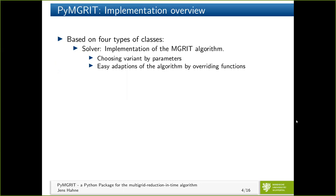Let's talk about the implementation details. In general, we have a class-oriented approach with four types of classes. We have the solver, which implements the MGRIT algorithm. You can choose between different variants by parameters, but most have default values. If you're a beginner, you can just use the defaults, which perform relatively well for most cases. If you're more of an expert, you can choose different variants. It is also easy to adapt the algorithm to your own needs by overriding single functions, for example the relaxation.